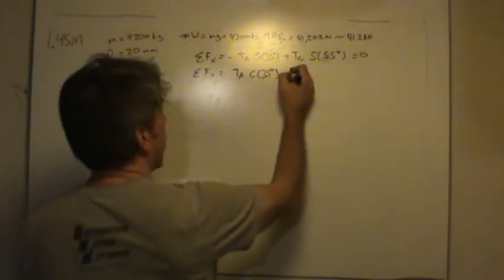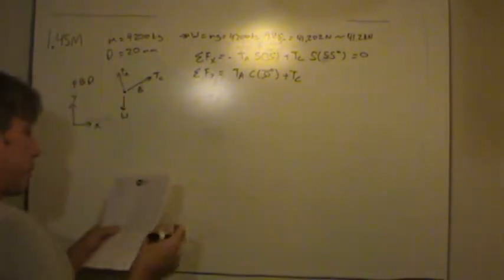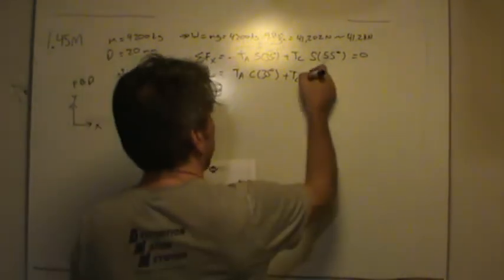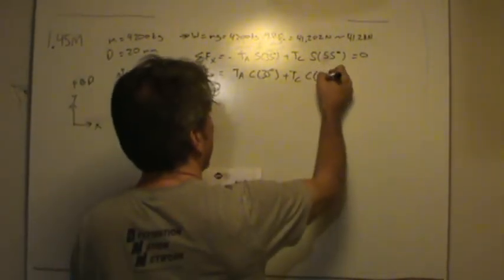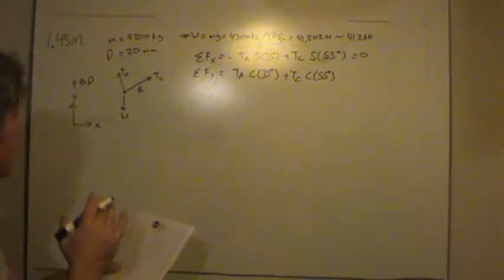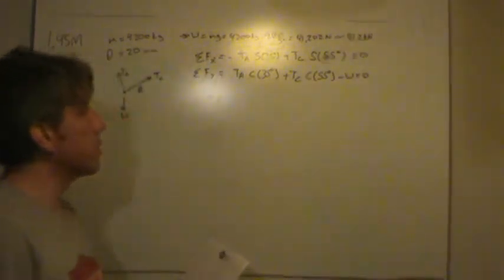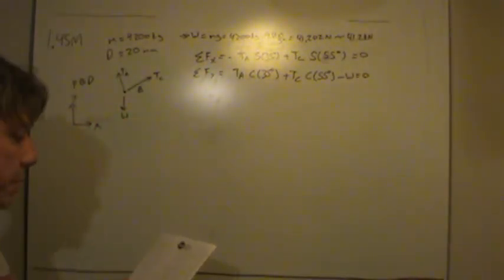TC has a positive component in this equation, since both are positive in the y direction, and has a cosine of 55 degree component, but we can't set this equal to zero because there's one more force. There's the weight force, and it acts downwards. So there's all of the forces that sum to zero in the y direction.